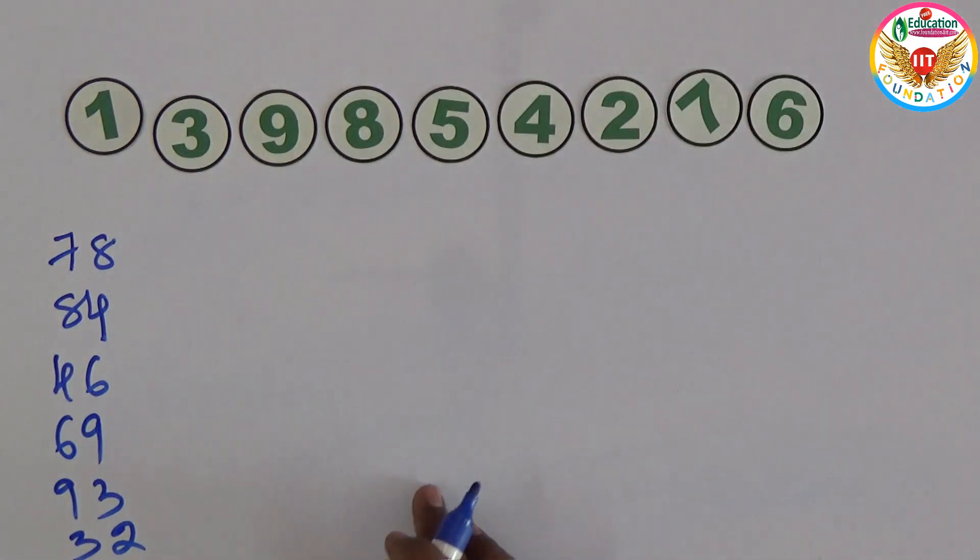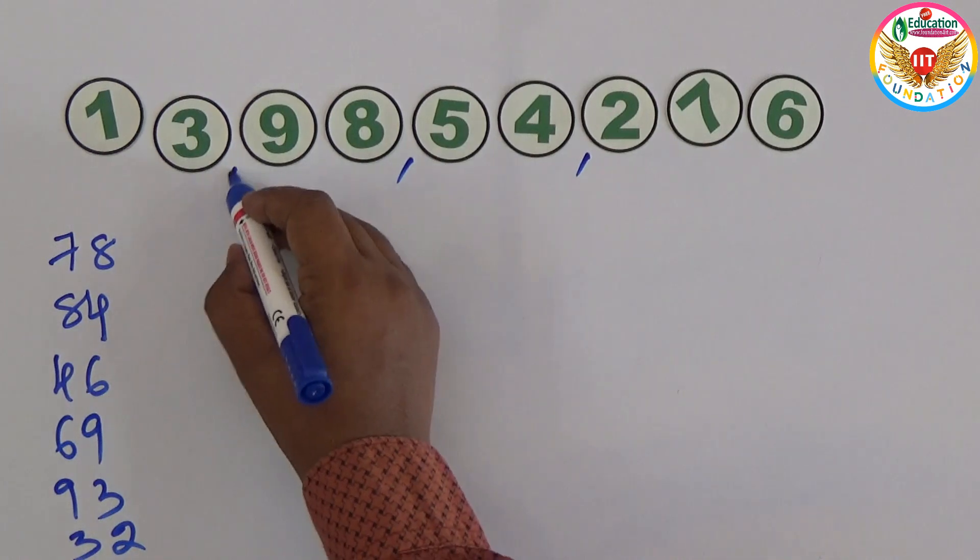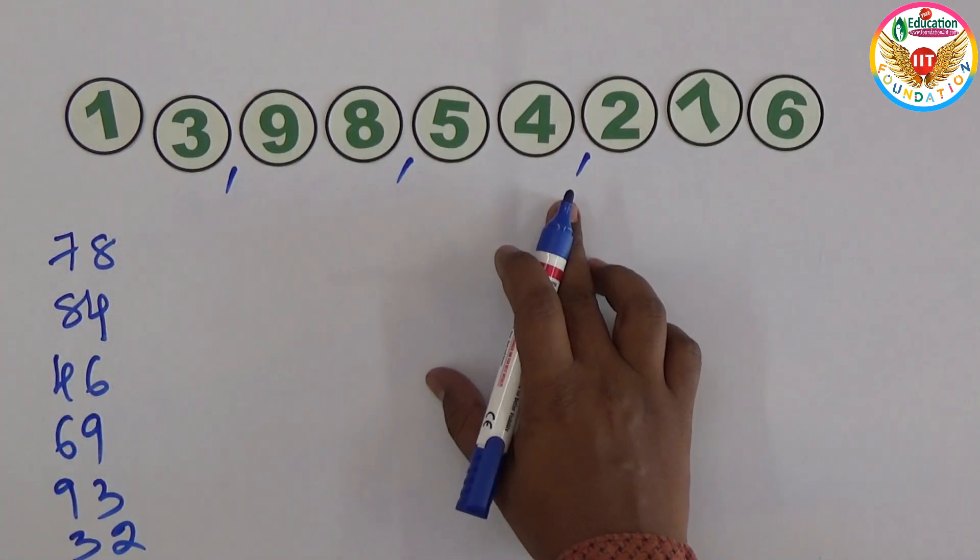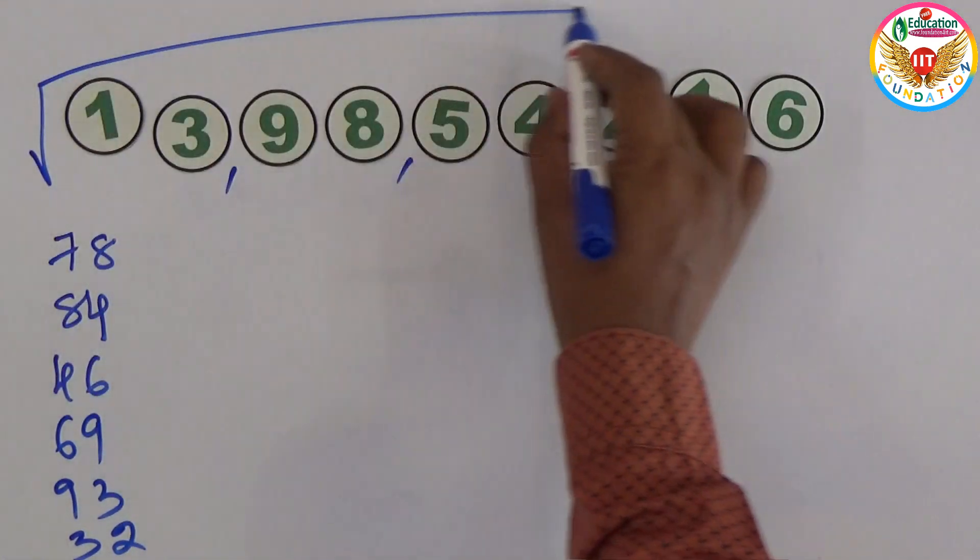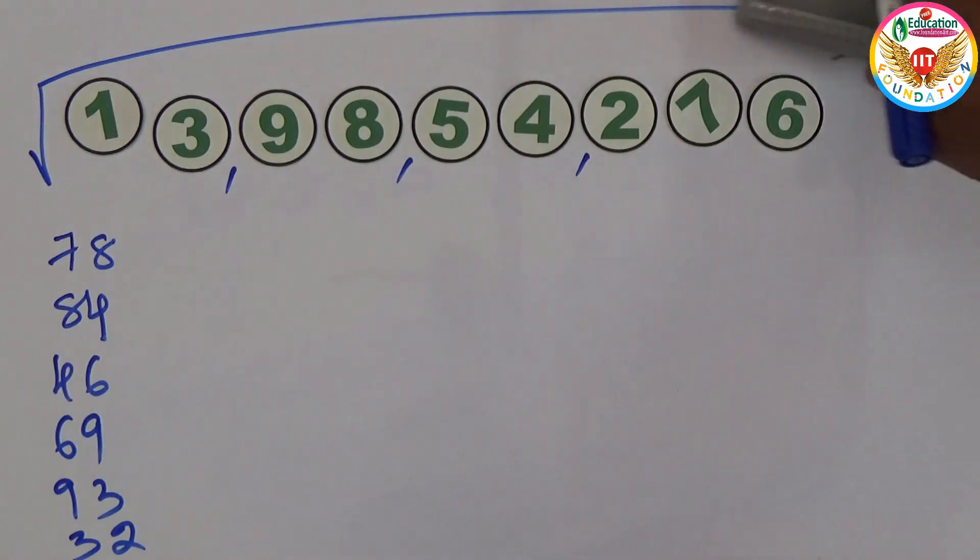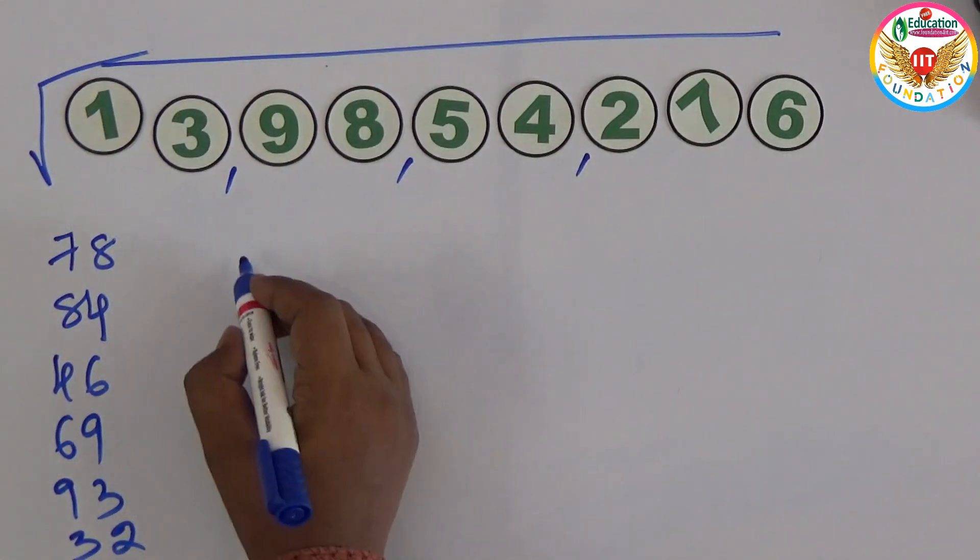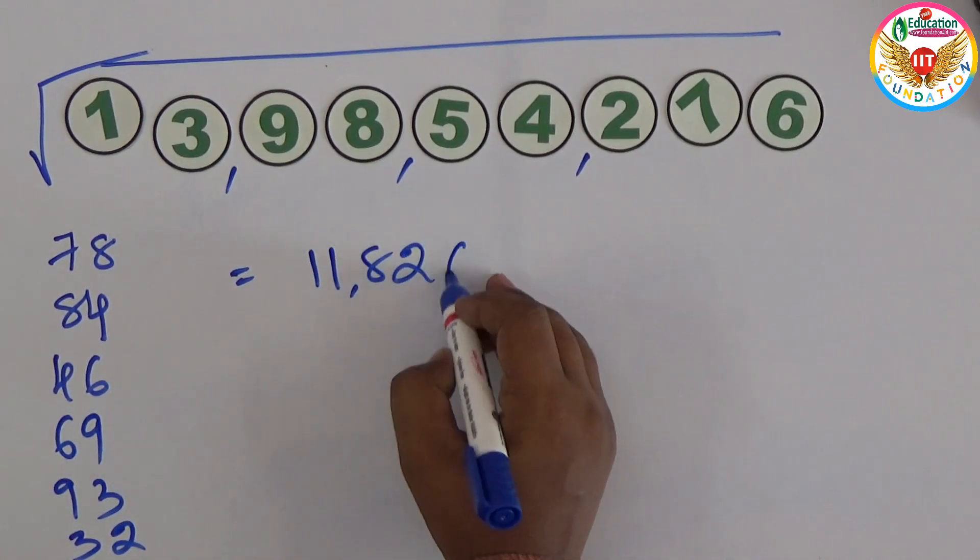Now you can observe this number. This is 13 crore 98 lakh 54,276. If you apply the square root for this, this value is exactly. If you apply the square root, square root of this number is 11,826.